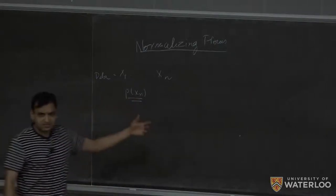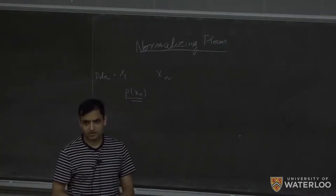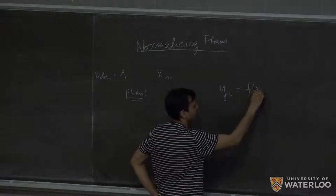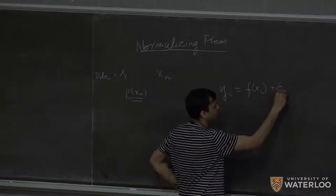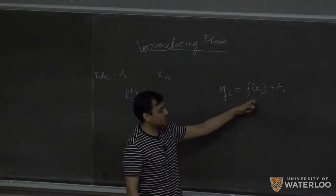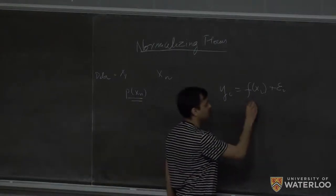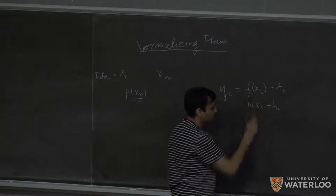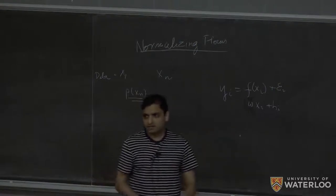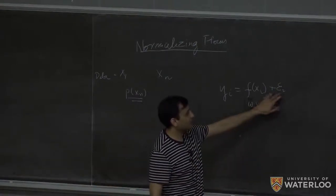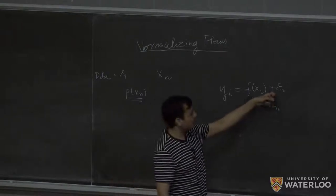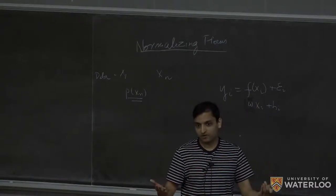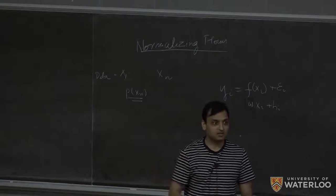So some part of this you already did in your first assignment, the third question, where what you had was that you had some data yi, which was coming from some function f of xi, and there was some noise term. And this f was what you were estimating using linear regression. So you were doing some sort of wxi plus bi. So here in the third question, what you did was you used likelihood, negative log likelihood, on this epsilon i. So this epsilon i was distributed as a Gaussian random variable. So how many of you know what a Gaussian distribution is?